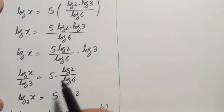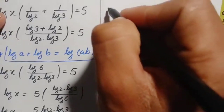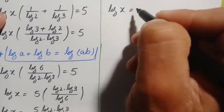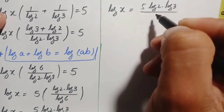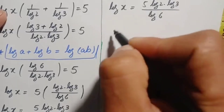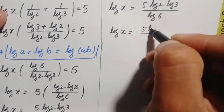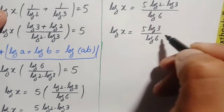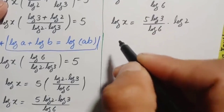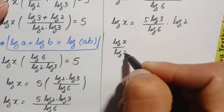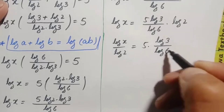For the second approach, we return to the equation: log of x equals 5 times log of 2 times log of 3 divided by log of 6. We rewrite the right-hand side as 5 times log of 3 divided by log of 6, times log of 2. Moving log of 2 to the left-hand side gives log of x divided by log of 2 equals 5 times log of 3 divided by log of 6.